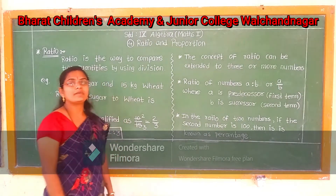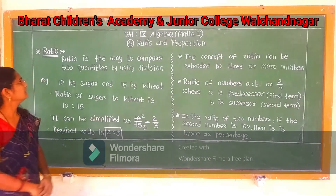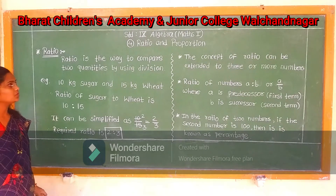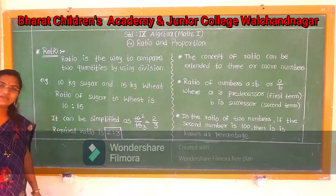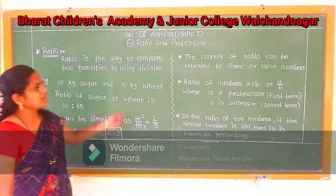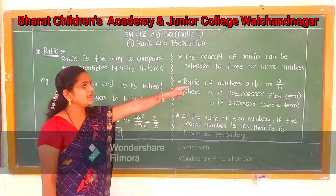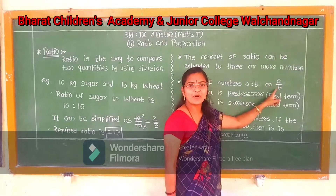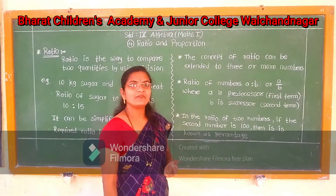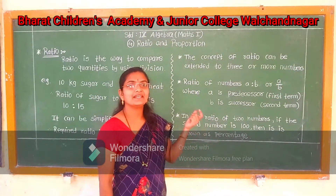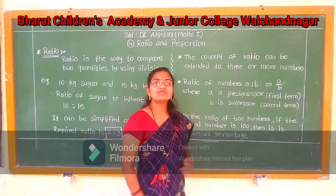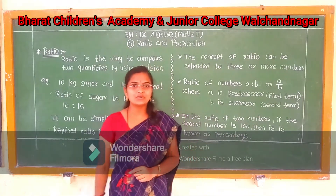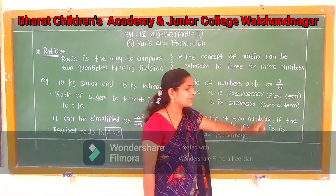Let's know more about ratio. Here you can see the definition of ratio. Ratio is the way to compare two quantities by using division. It can be represented as A is to B, using this symbol, or A upon B. There is a special name for these quantities A and B. A is known as predecessor or first term. B is known as successor or second term.